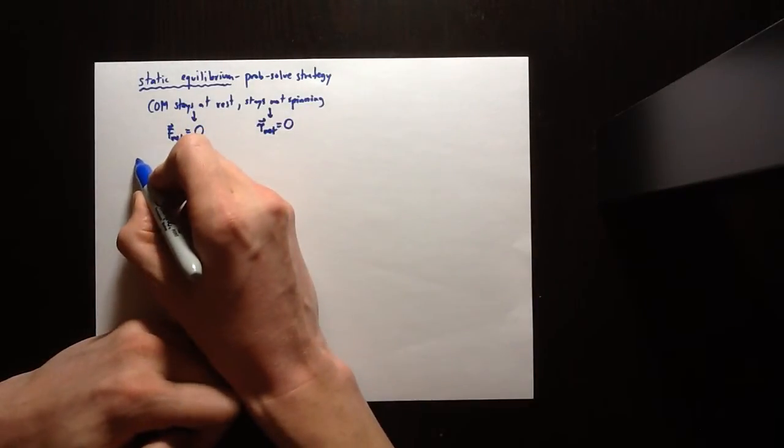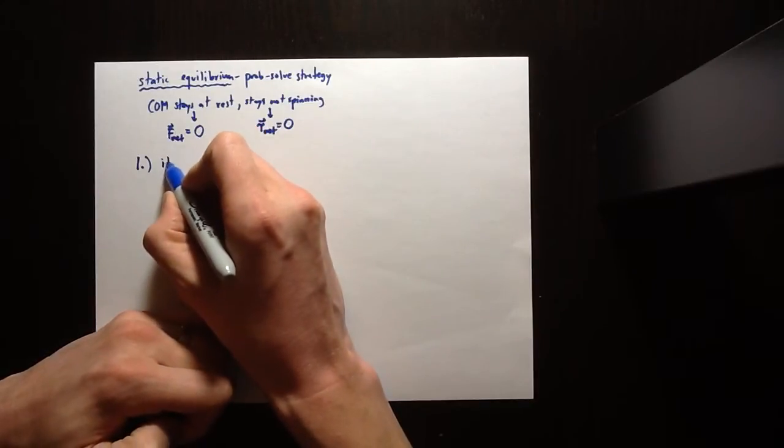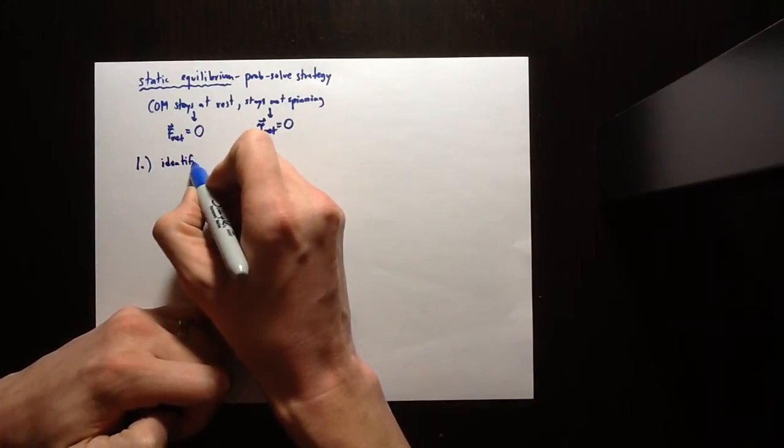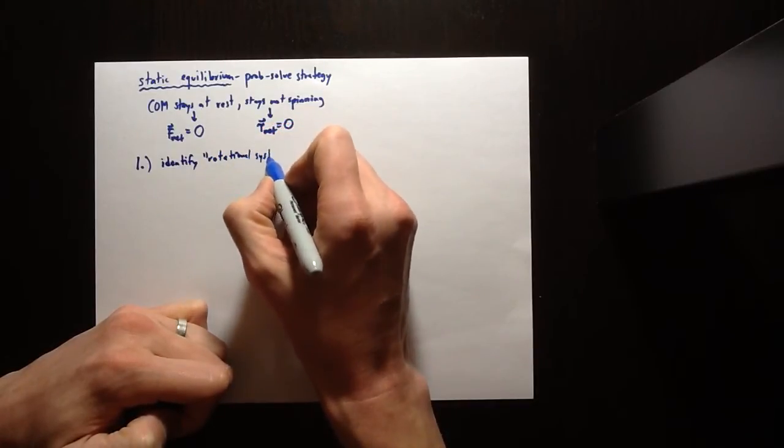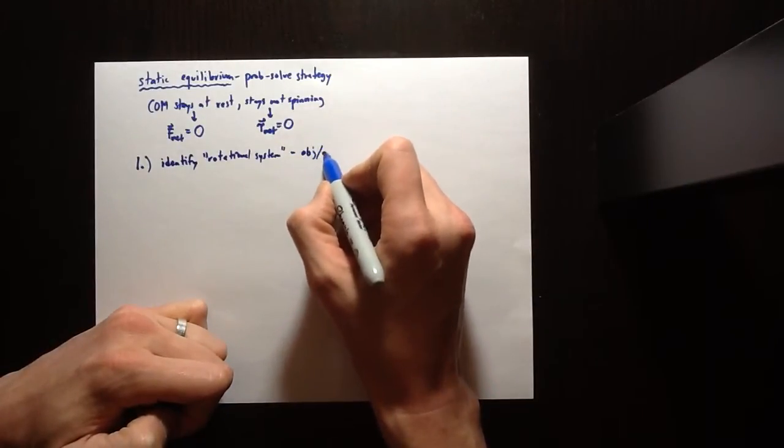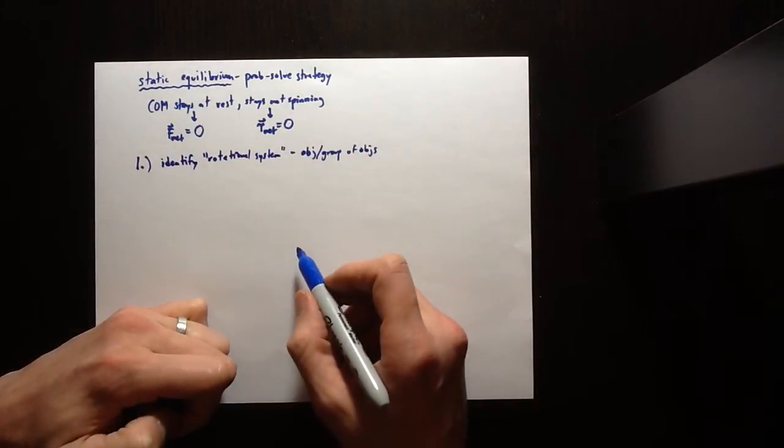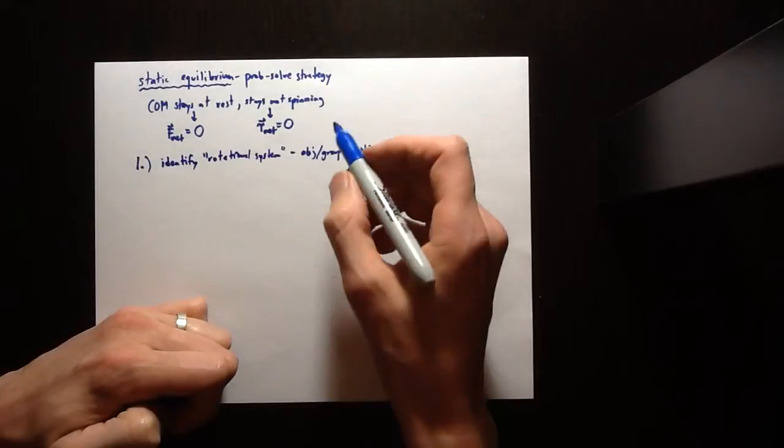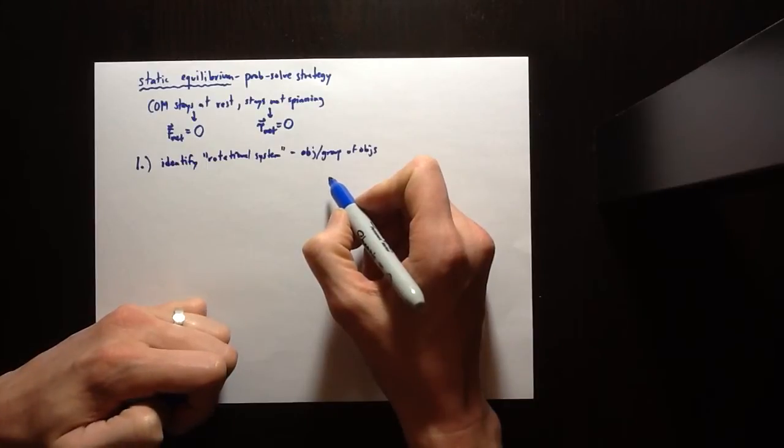So any system which is doing absolutely nothing, that's what static equilibrium is. So here's our problem solving strategy. First, what we want to do is we want to identify what we call the rotational system. So the rotational system is either a single object or a group of objects that we're going to think of as one. That's your system. These are usually you pick a group of objects that kind of lives or dies together. So they either move together or, in this case, they don't move together.